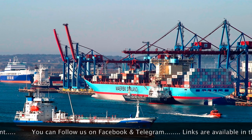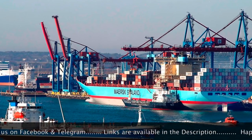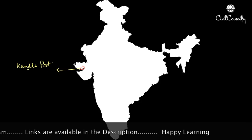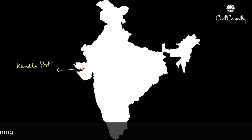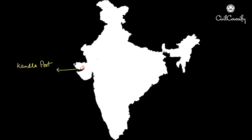The first one is Kandla port. Kandla port was developed after independence and is located at the head of the Kutch peninsula. It was basically developed to cater to the needs of western and northwestern India and also to reduce the burden of the Mumbai port. The Kandla port is specially designed to receive large quantities of petroleum and fertilizers.